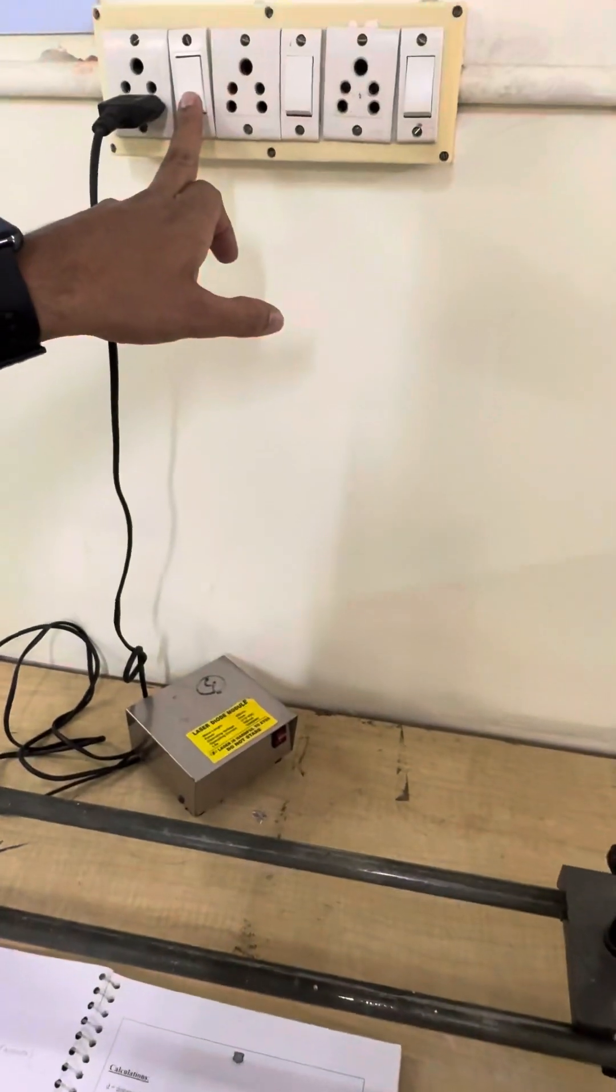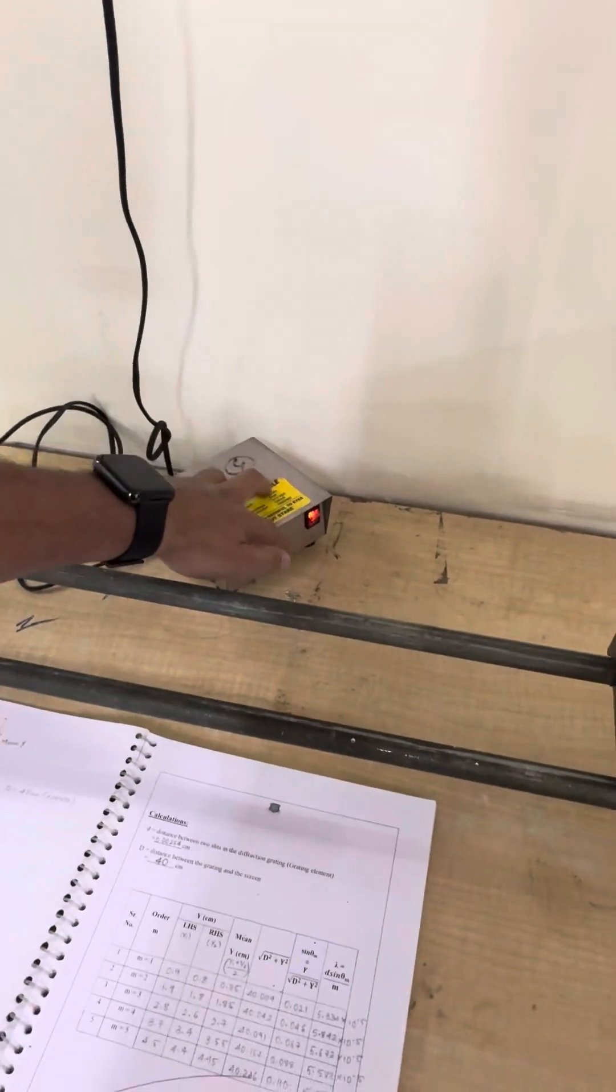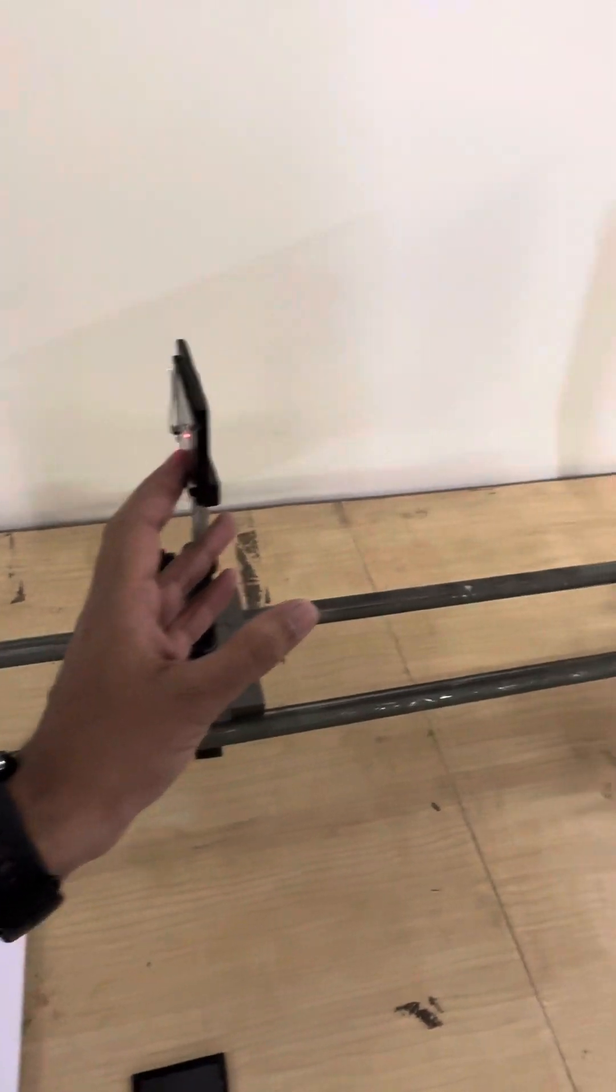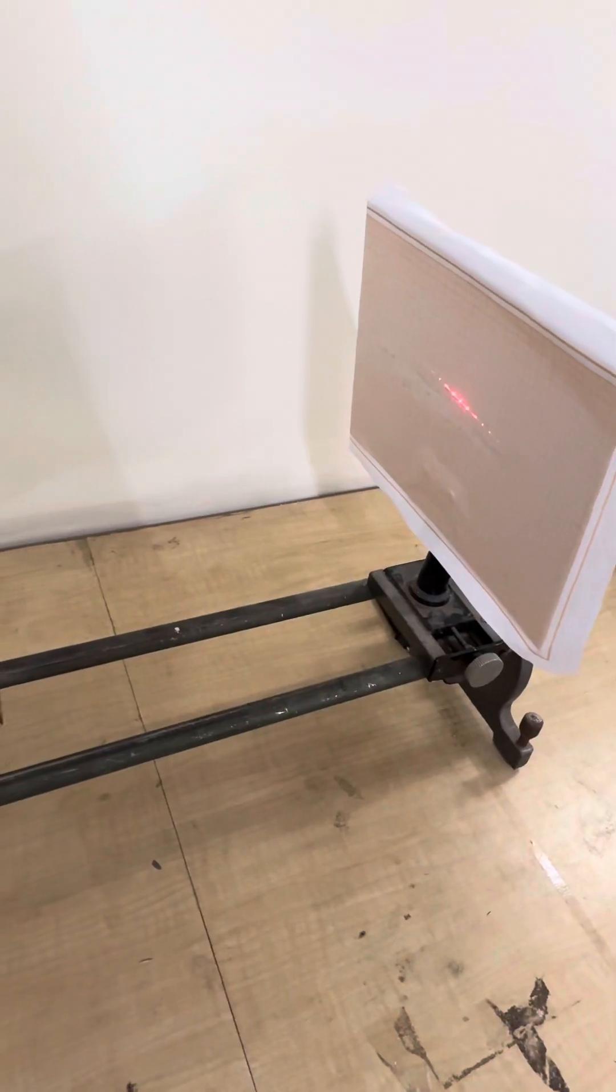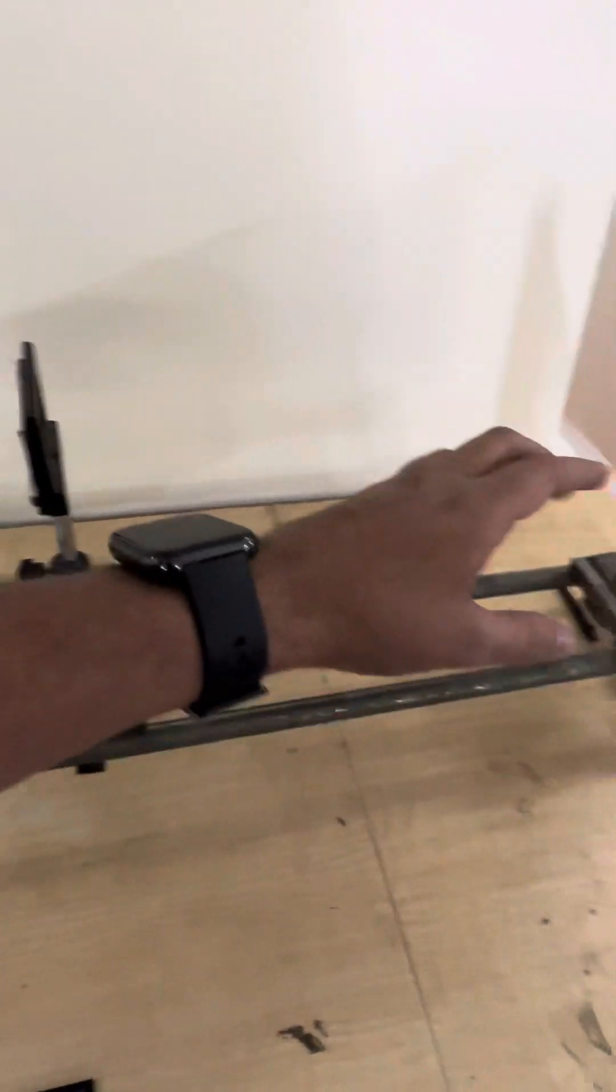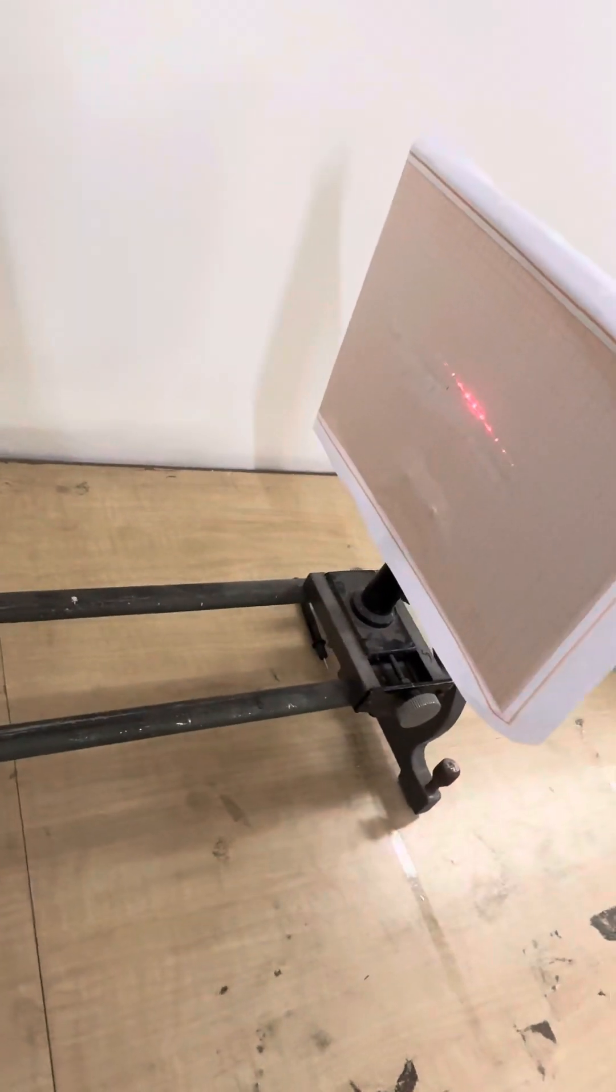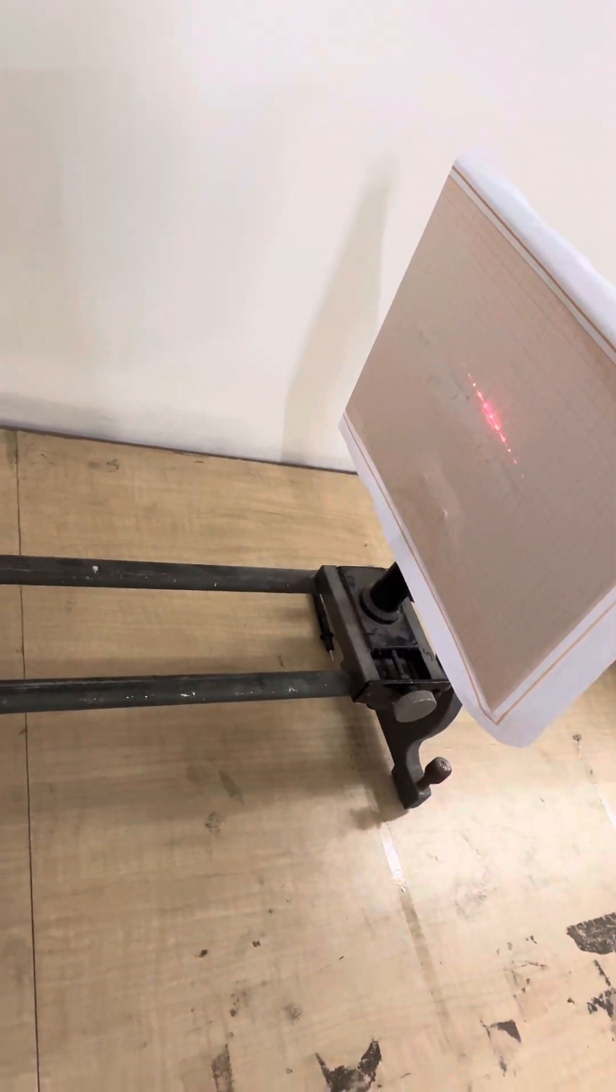Now what we have to do? We have to just turn on the switch of this experiment. Laser module is turned on and if you observe, then the laser diffraction grating is obtained on the screen. So you have to just calculate the distance from the central maxima to different types of maximas.